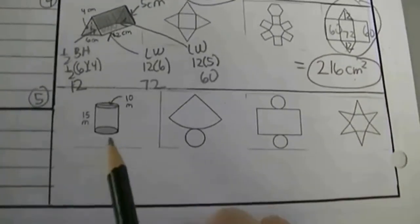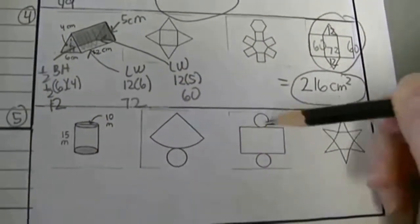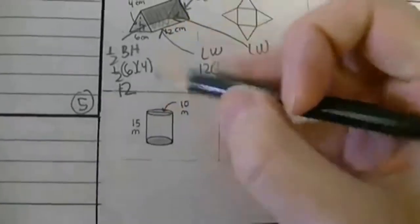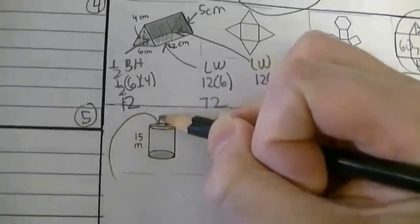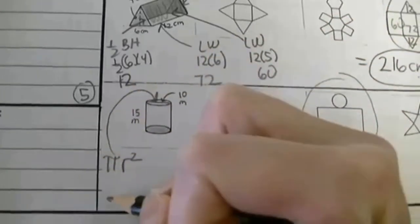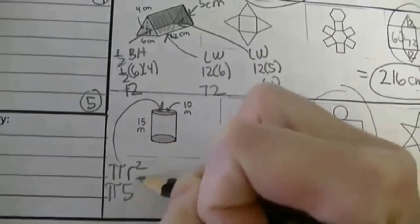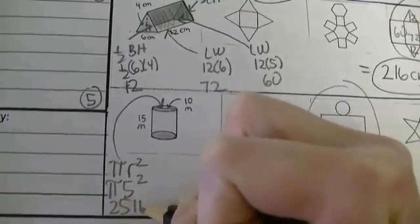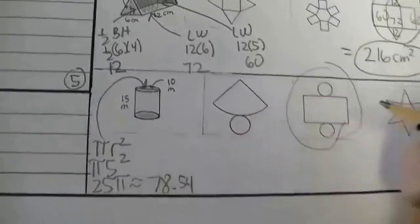A cylinder is a little bit weird — here's its net. Let's start with finding the area of the circle: pi times radius squared. The diameter is 10, so the radius is 5. Squaring that: 25 pi, which is approximately 78.54.